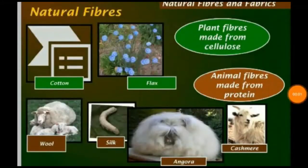Natural fiber — fibers which we get naturally from plants and animals — for example, cotton and jute, are called natural fiber.